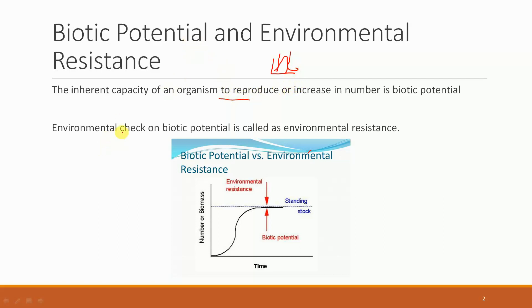Next is environmental resistance. Environmental resistance refers to the environmental check on biotic potential. If there is no environmentally limiting factor, then the increase in population would continuously happen. Looking at this graph, it would have had a tendency to keep increasing if there was no check on it, but definitely there are environmental factors which ensure that there is a check.